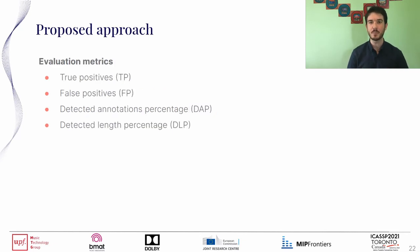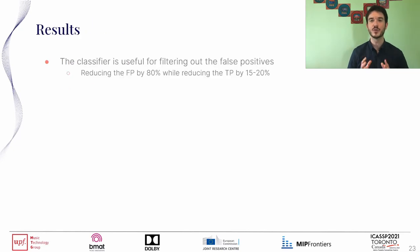We use four metrics to evaluate our systems. The first two are true positives and false positives. The next two are: first, detected annotations percentage — the ratio of correctly identified annotations over all annotations in the ground truth; and second, detected length percentage — the ratio of correctly identified duration over the entire duration of the concerts.